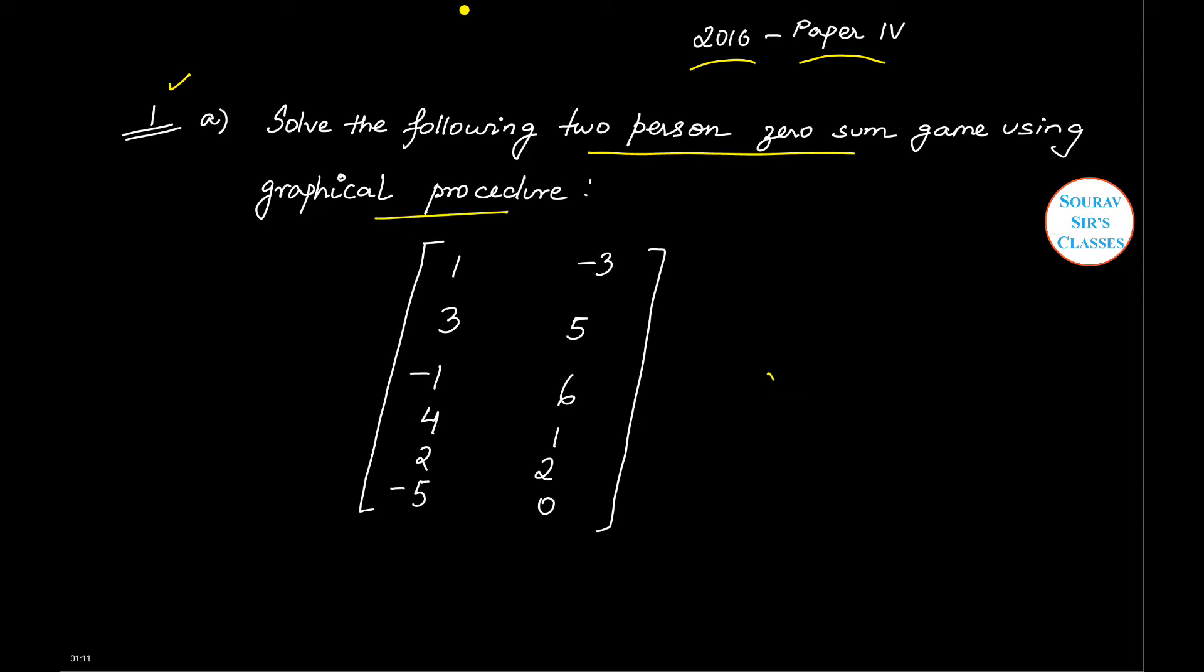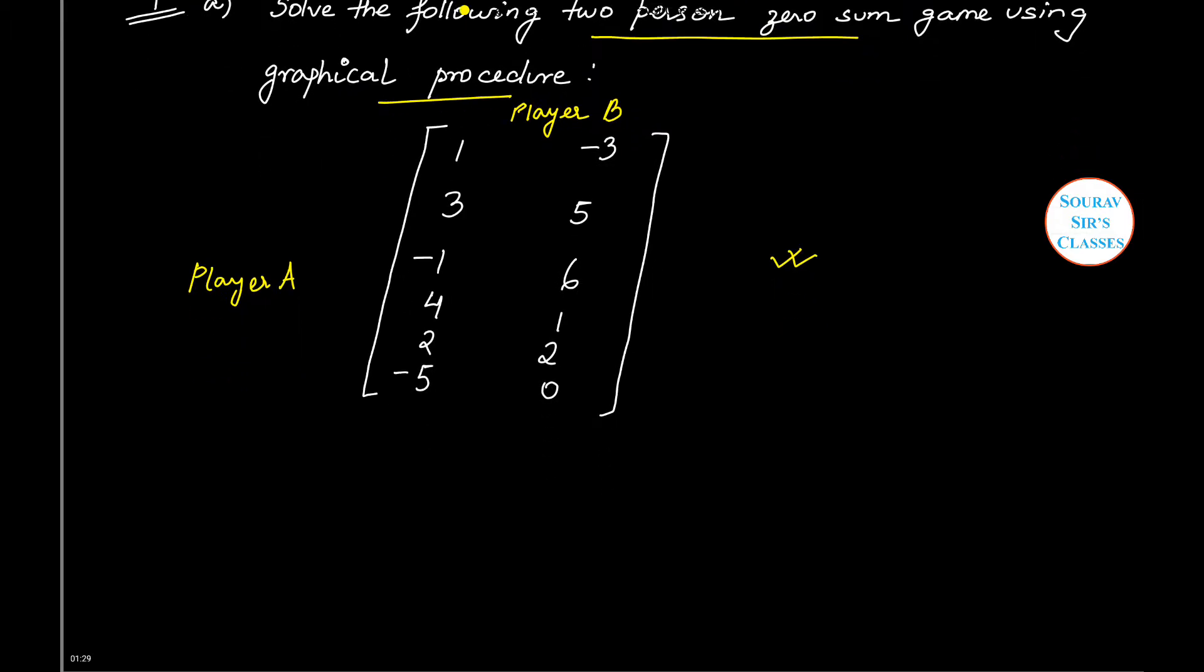Let us read the question. The question says solve the following two percent zero sum game using graphical procedure, and this is the game given to us. I'm marking the row as player A and the column player as player B.